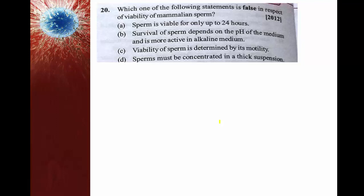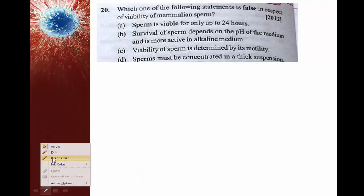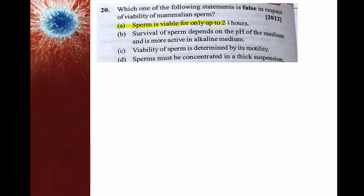Which of the following statements is false regarding viability of mammalian sperms? Options: sperms are viable only up to 24 hours; survival of sperm depends on pH and is more active in alkaline medium; viability is determined by motility; sperms must be concentrated in a thick suspension. The false statement is that sperm is viable only up to 24 hours — sperms can survive in the female reproductive tract for up to 5 days, though fertilization capacity lasts only 48 hours. So the false statement is option A.